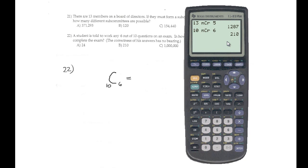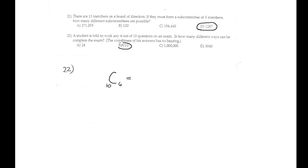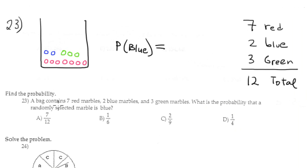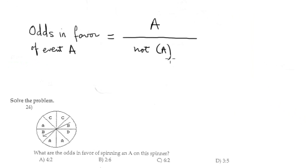Okay, 23. A bag containing 7 red marbles, 2 blue marbles, and 3 green marbles. What is the probability that a randomly selected marble is blue? How many marbles we have in total? We have 7 red, 2 blue, 3 green, in total we have 12. This is the sample space, cardinality 12. And blue, how many blue? We have only 2. Reduce to lowest terms: 1 over 6, option B.